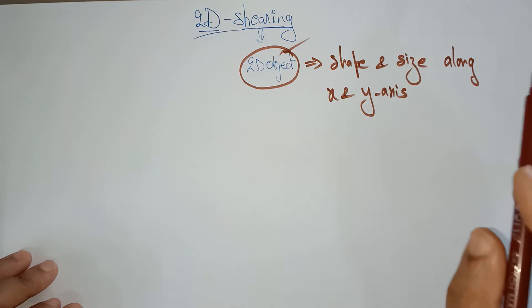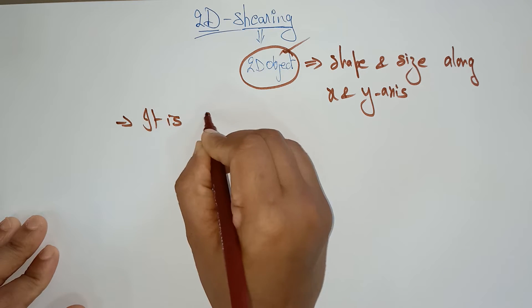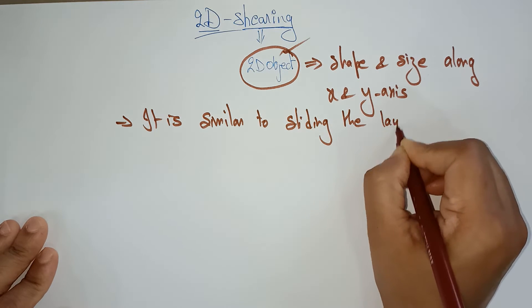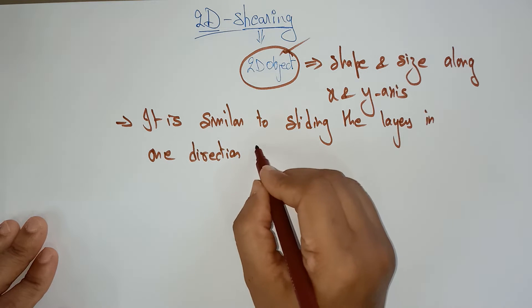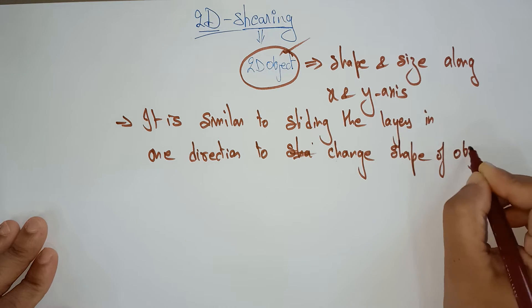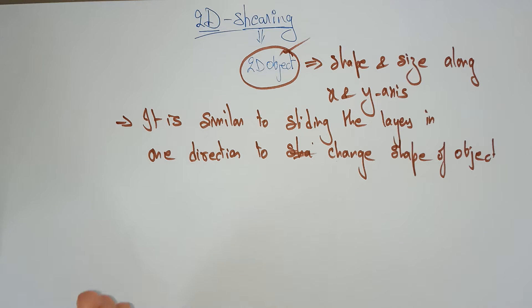2D shearing deals with changing the shape and size of a 2D object along the X and Y axis. In simple terms, it is similar to sliding the layers in one direction to change the shape of an object. You drag it in the X direction or the Y direction — you take a corner and try to slide it, and obviously the 2D object shape will change. It is an ideal technique to change the shape of an existing object in a 2D plane.